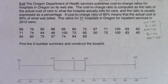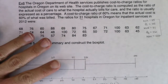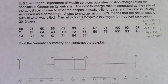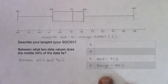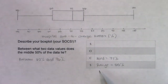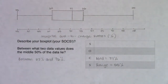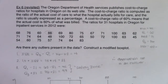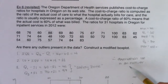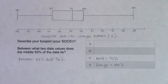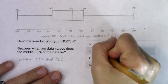The last example we want to fill in SOCS for is example six — the Oregon hospitals cost-to-charge ratios. When we first saw this, we were building a regular box plot, not a modified one showing outliers. At that point we were able to answer spread and center, but shape and outliers were left empty. When we revisited this problem we did crunch the safety zone and determine that observation 100 was an outlier. So I'll fill that in now.